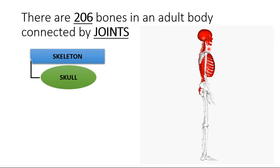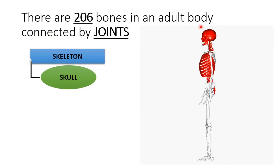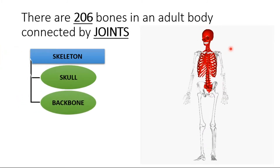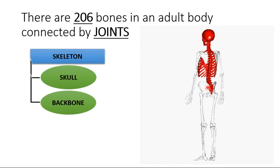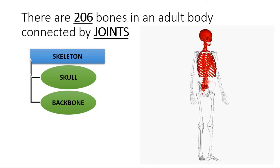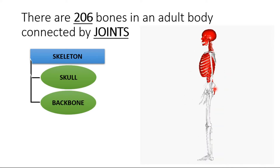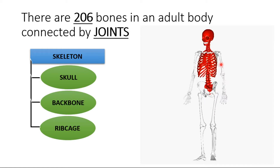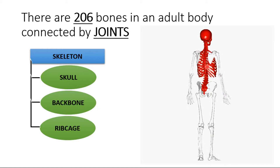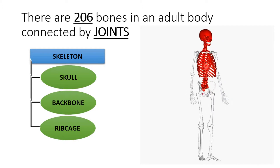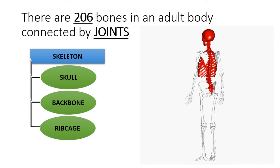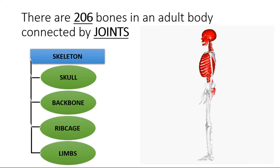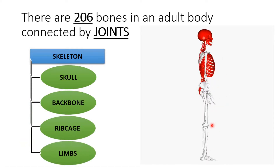The first type is skull, which forms our head region. The second type is backbone. The third one is called rib cage. The fourth one is called limbs — we have limbs in the upper body as well as in the lower body.